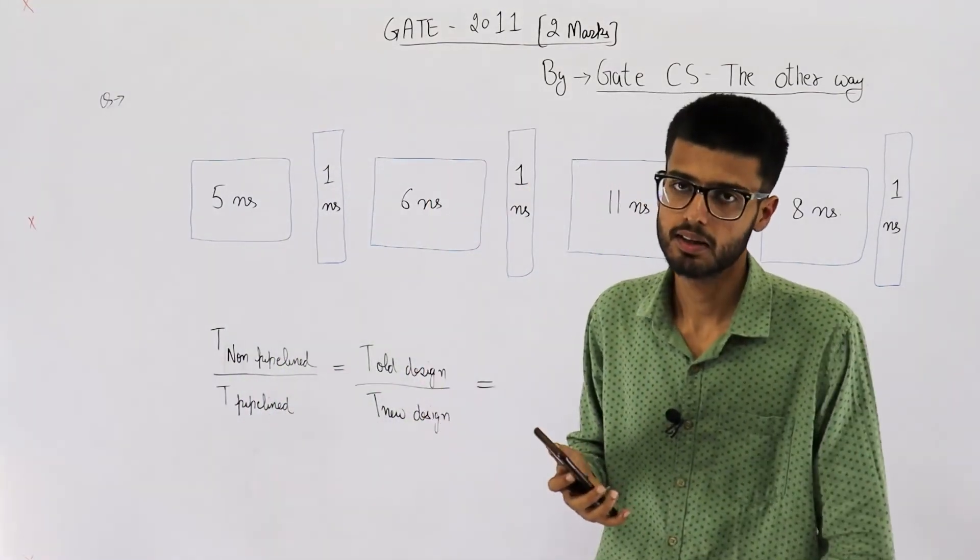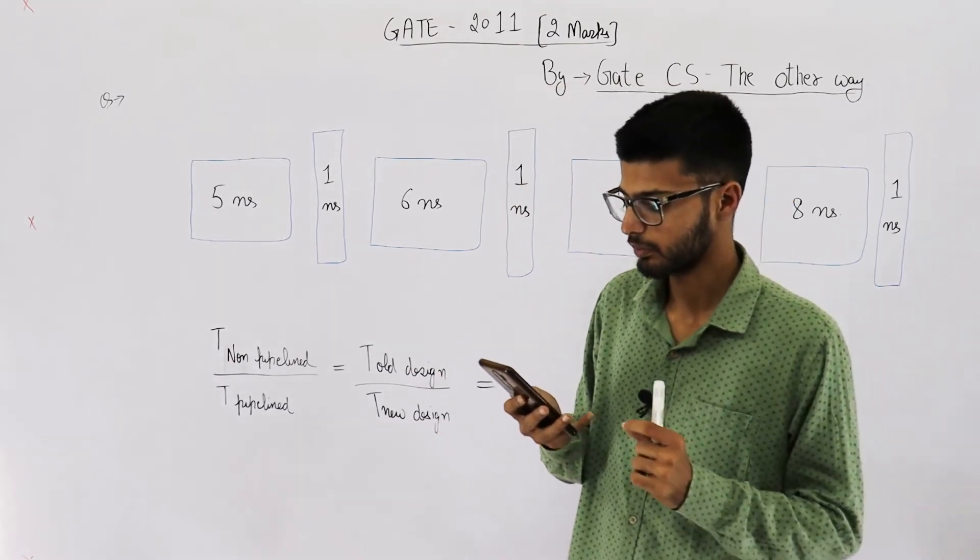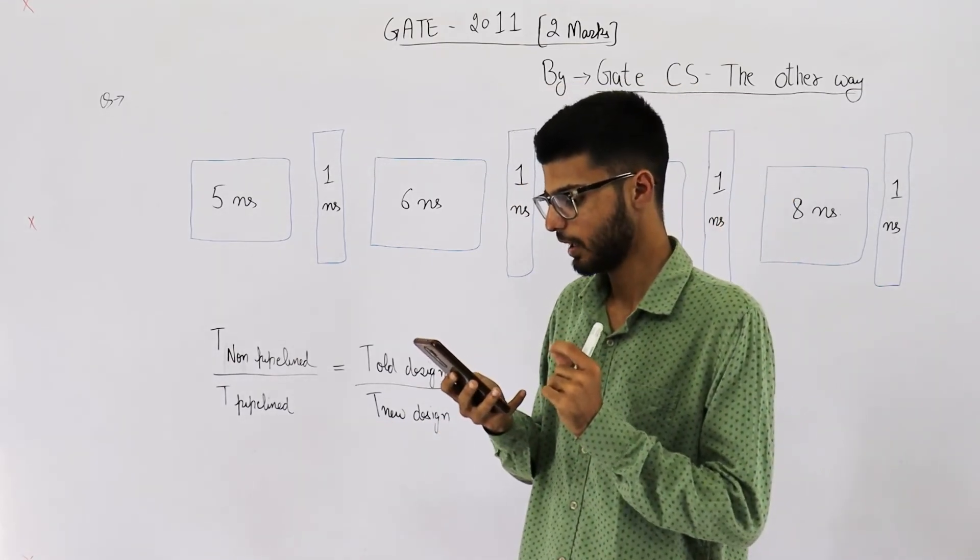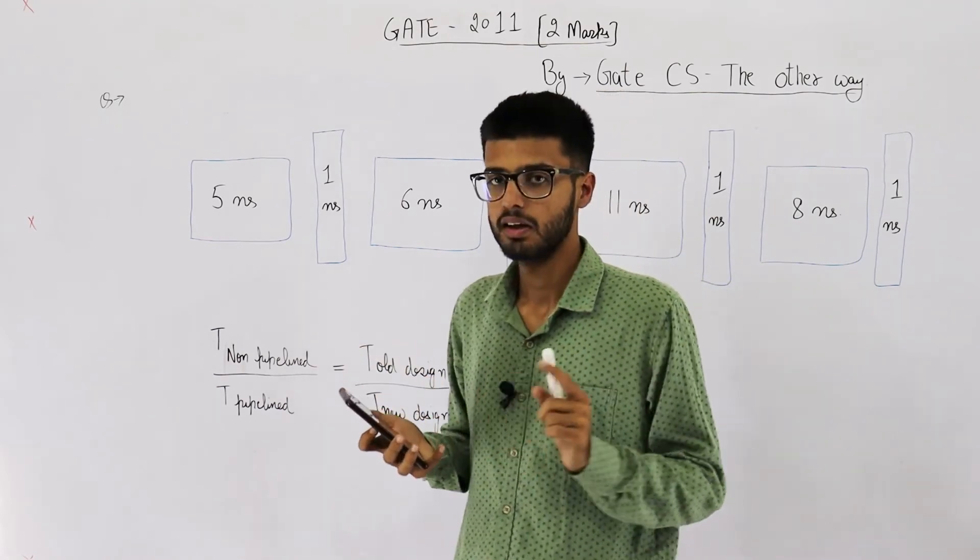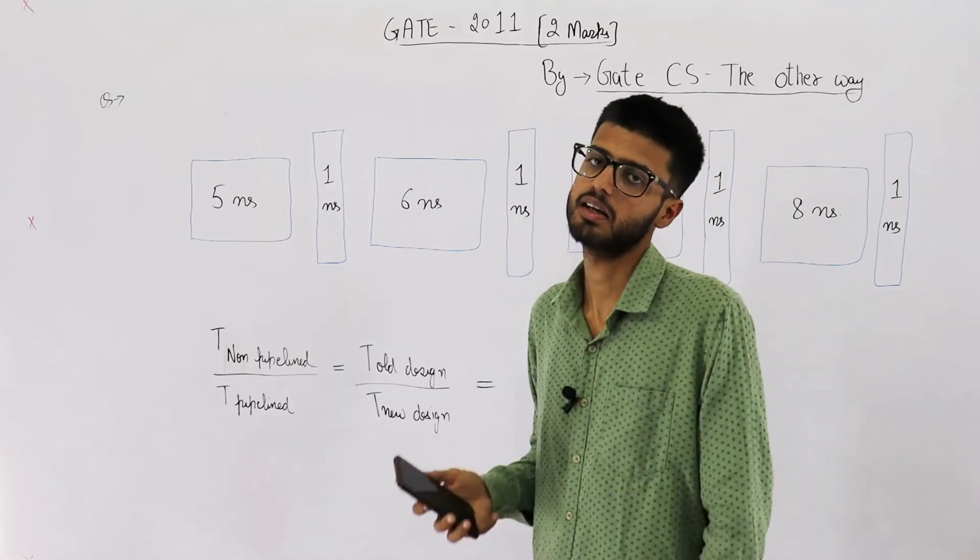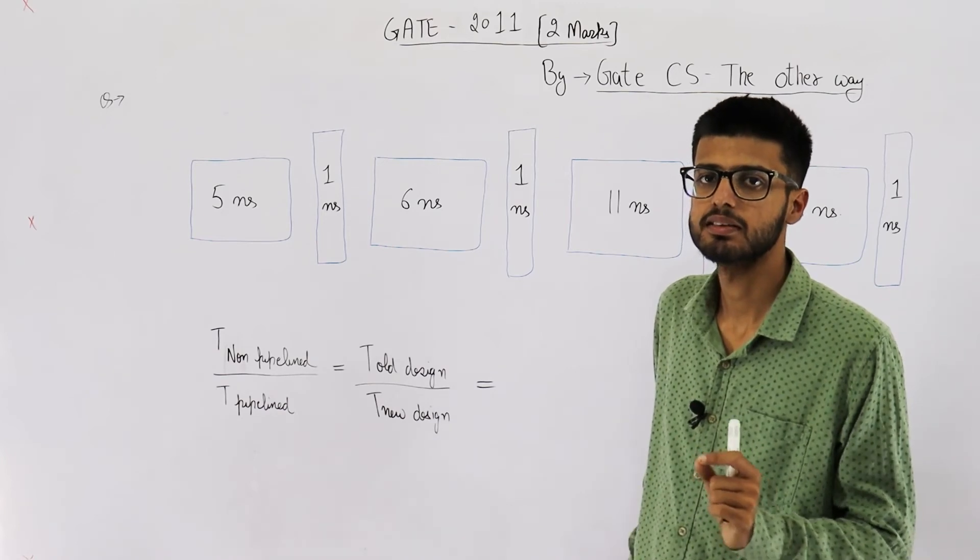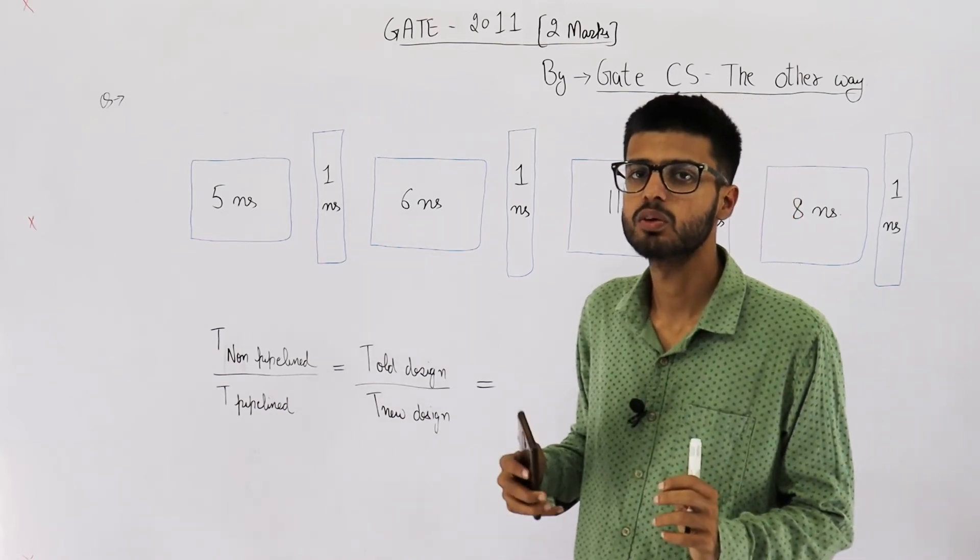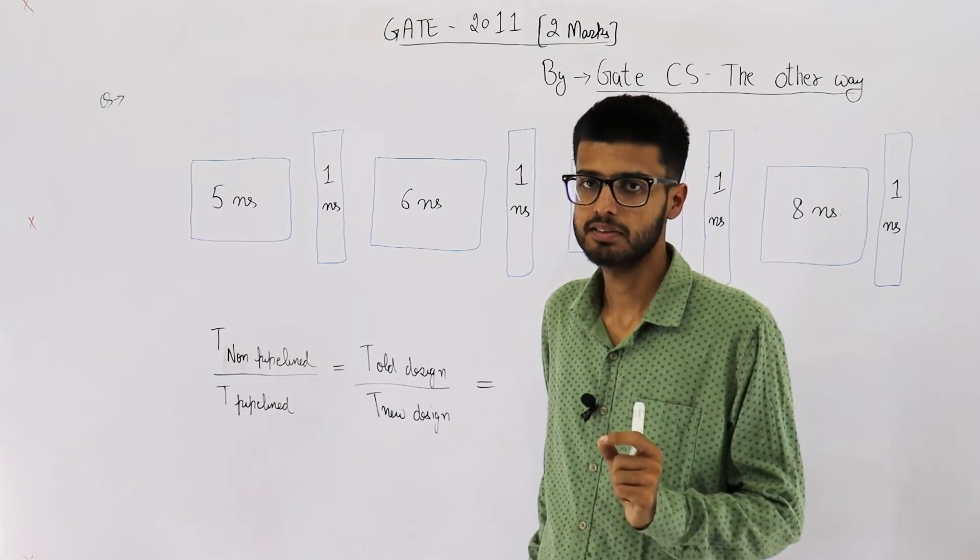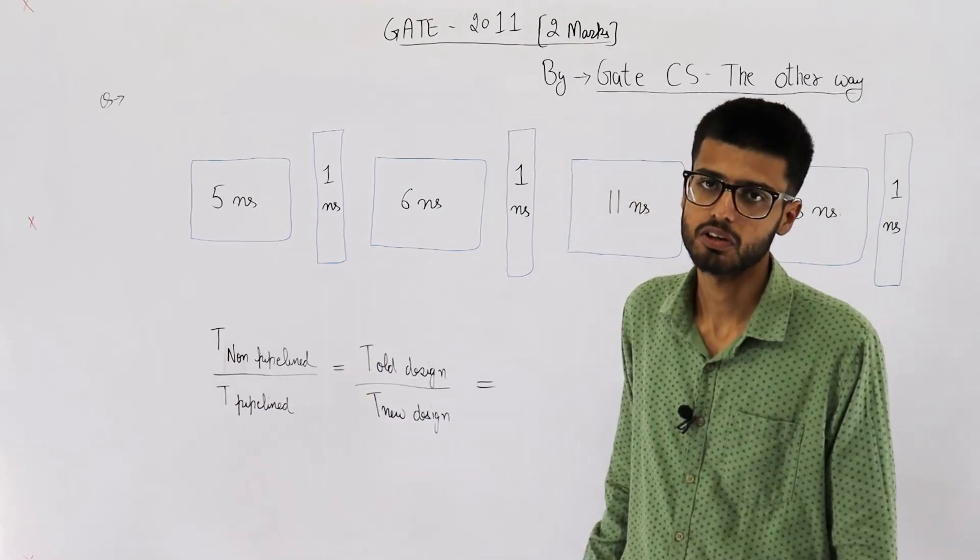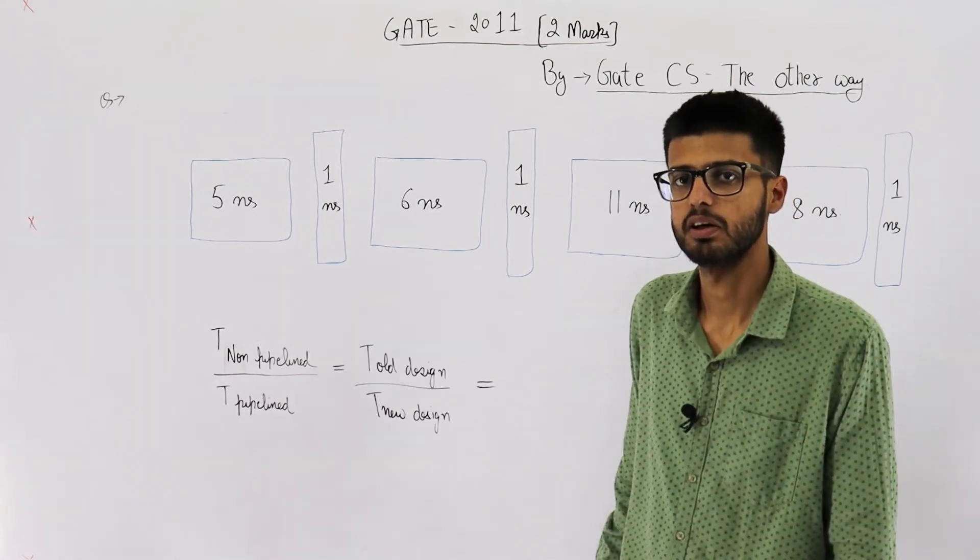So one point that I need to discuss is this line in question. What is the approximate speedup of pipeline in steady state under ideal conditions? In steady state under ideal conditions. Under ideal conditions means there are no dependencies whatsoever. That means we don't need to introduce stalls in the pipeline. And under steady state means we are executing a very large number of instructions. That's also a reason why I assumed average CPI to be 1.